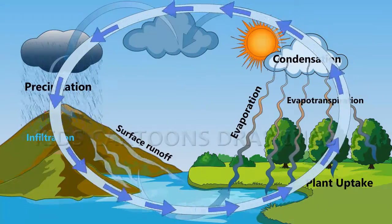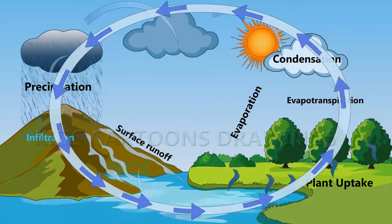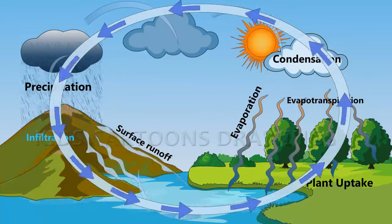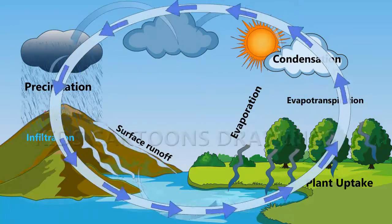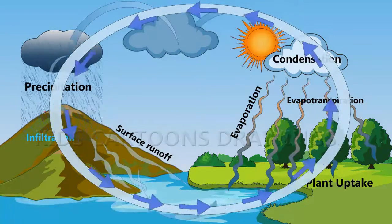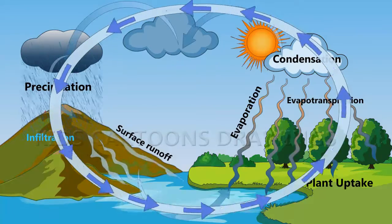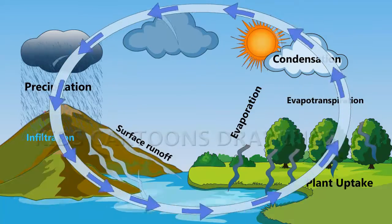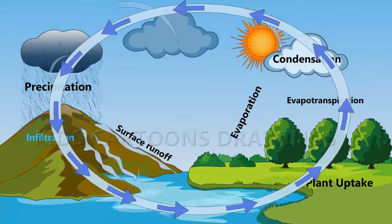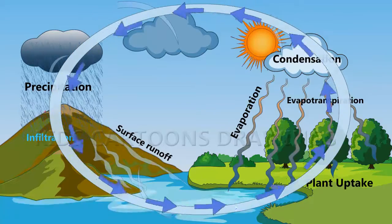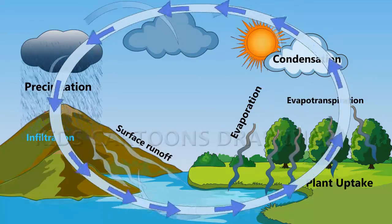The water cycle is a continuous journey. Water travels from the sea to the sky, to the land, and back to the sea. The movement of water around our planet is vital to life, as it supports plants and animals.